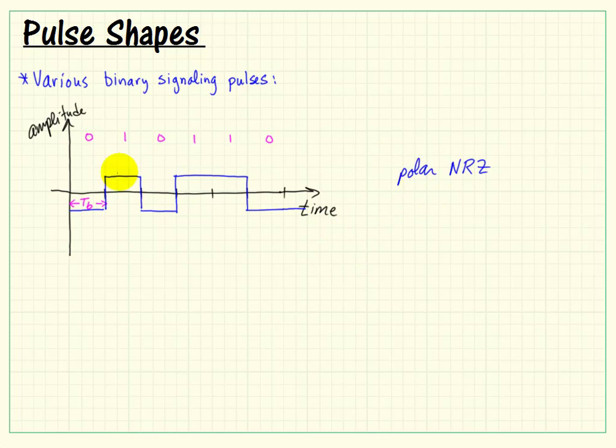This is an example of polar NRZ. In this case, it always exists as some nonzero value, with amplitude A and then another value minus A. It's NRZ, meaning it does not return to zero. This is an example of unipolar return to zero, or RZ.